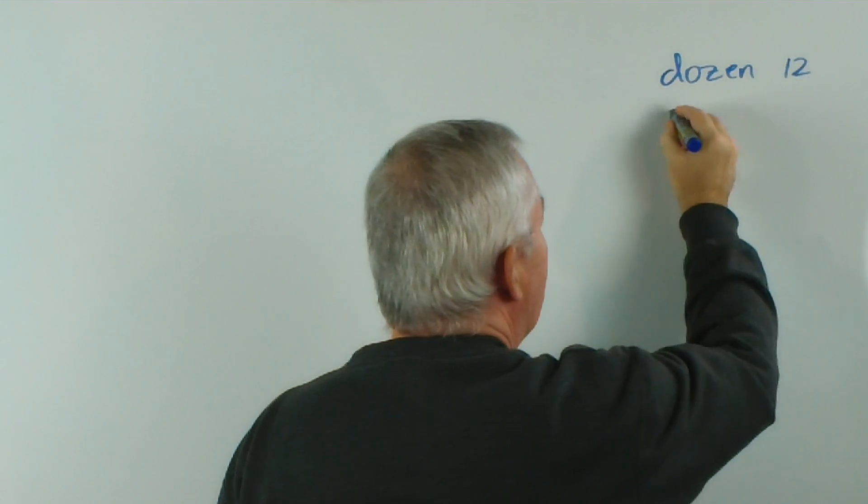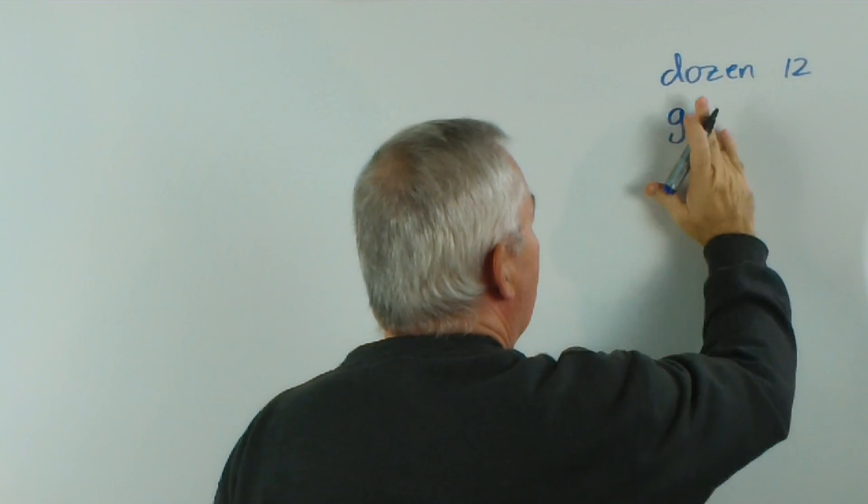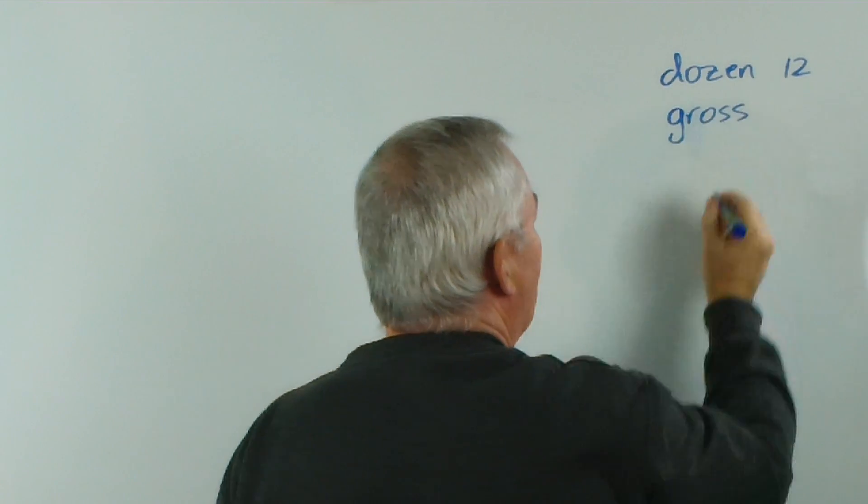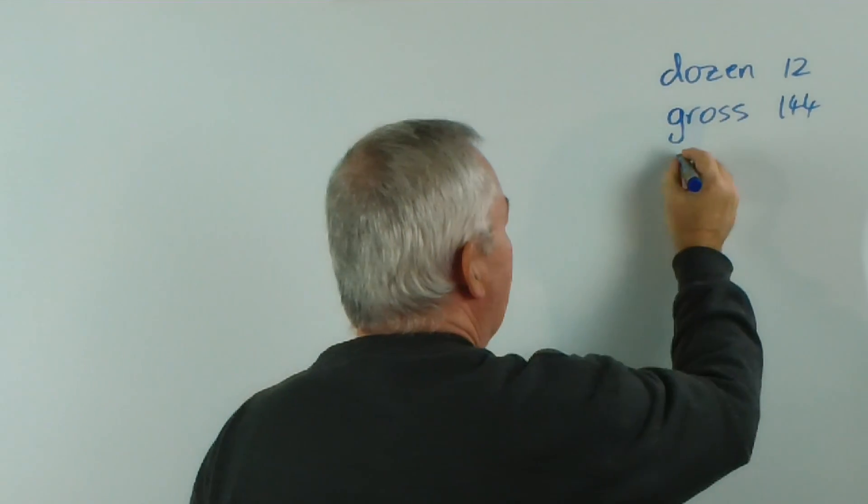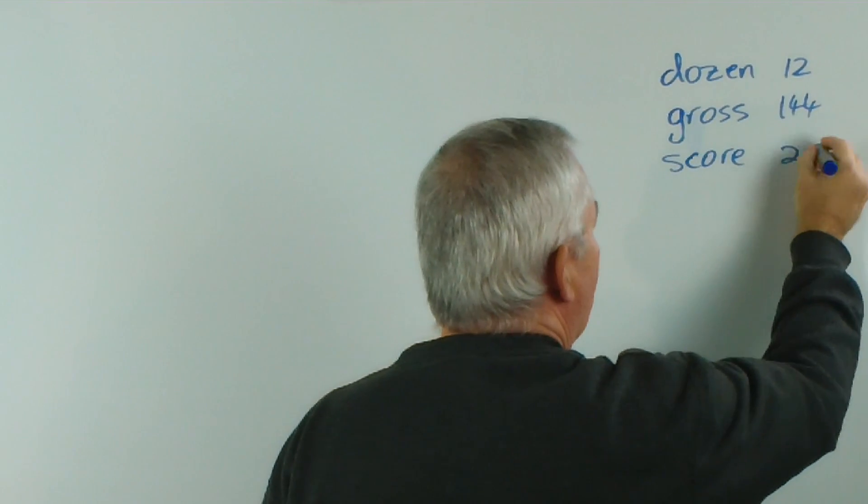When you have a dozen dozen in the old days, when I was growing up, it was called a gross, which is 144, and there's another old term called a score, which means 20.